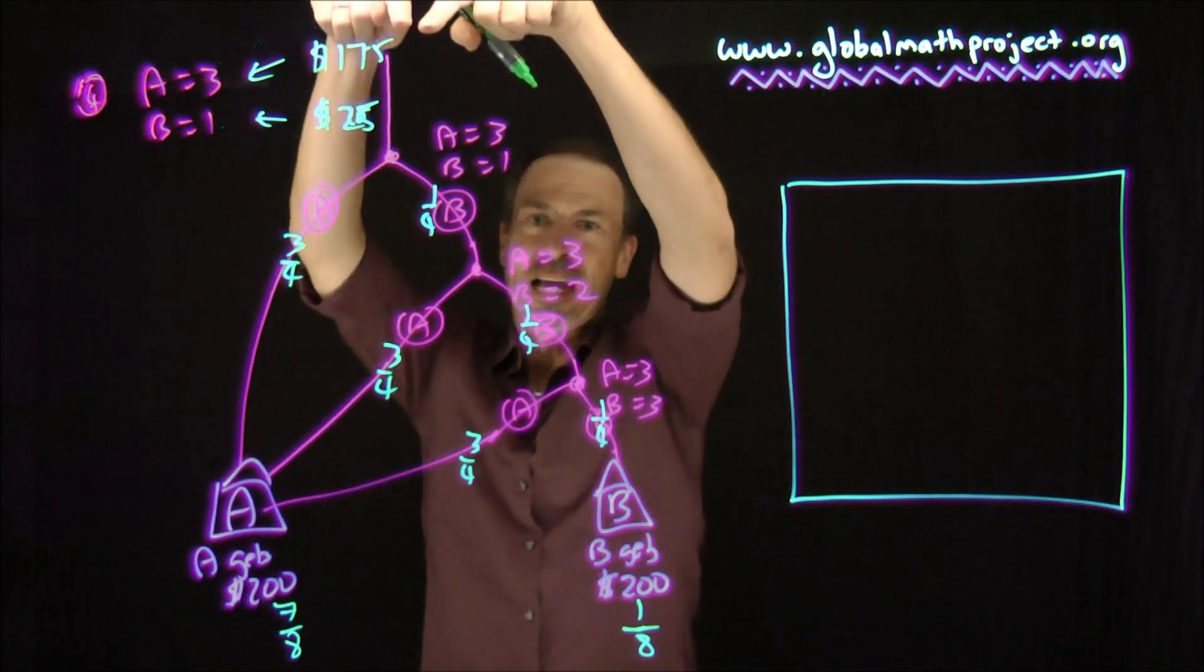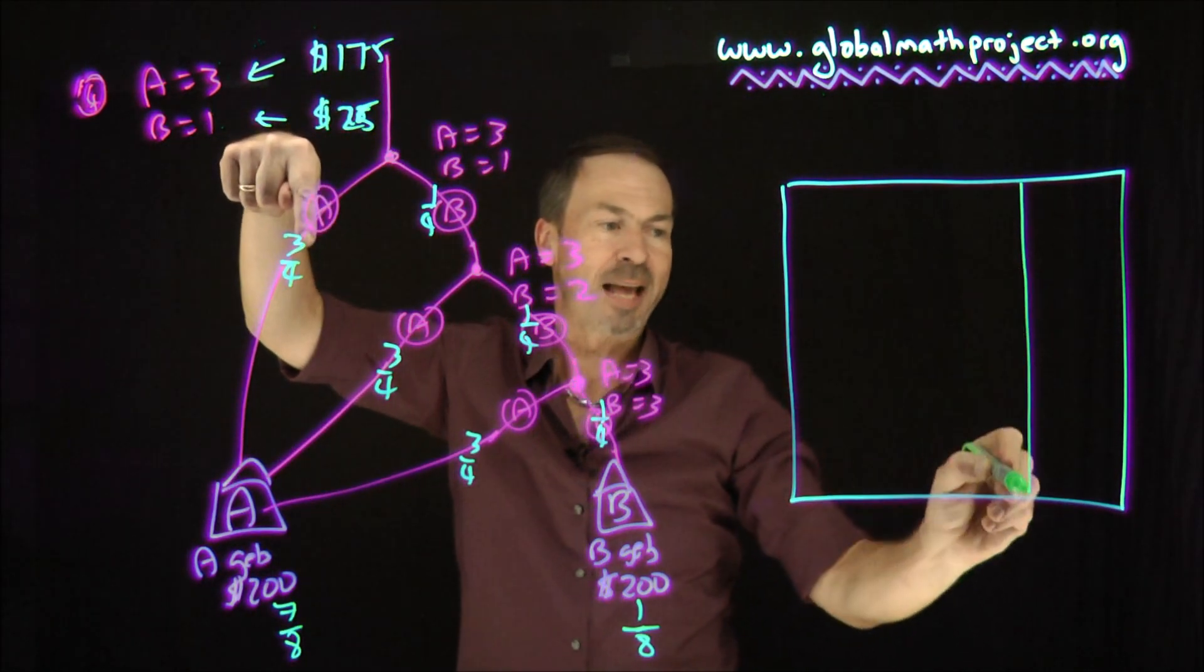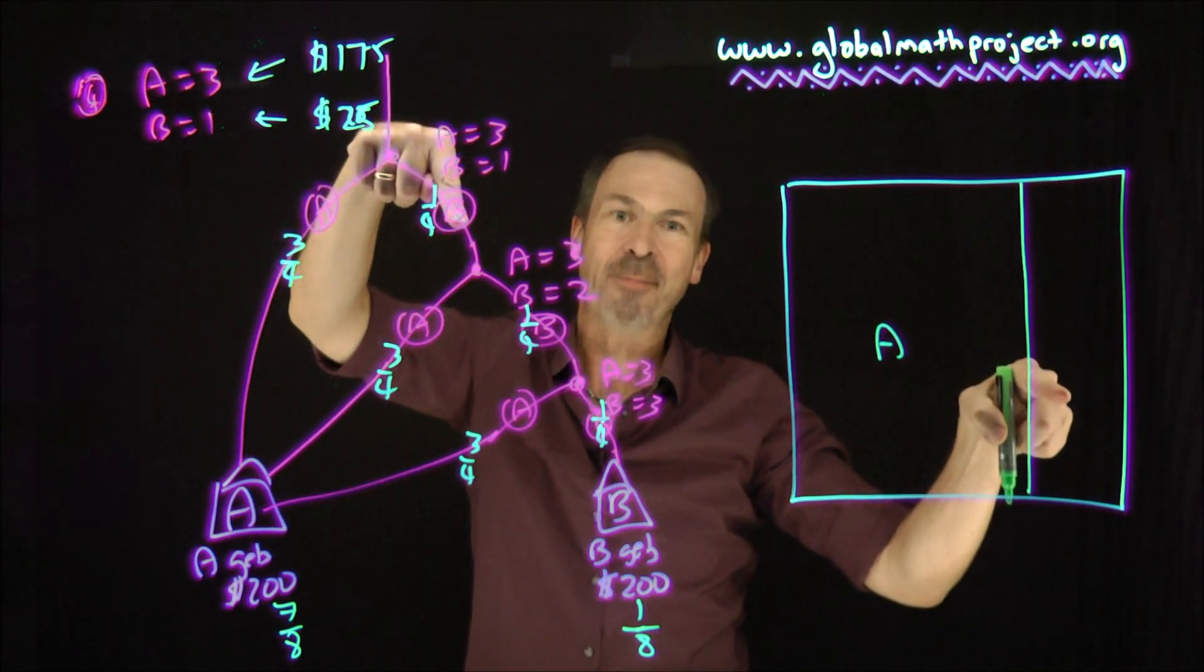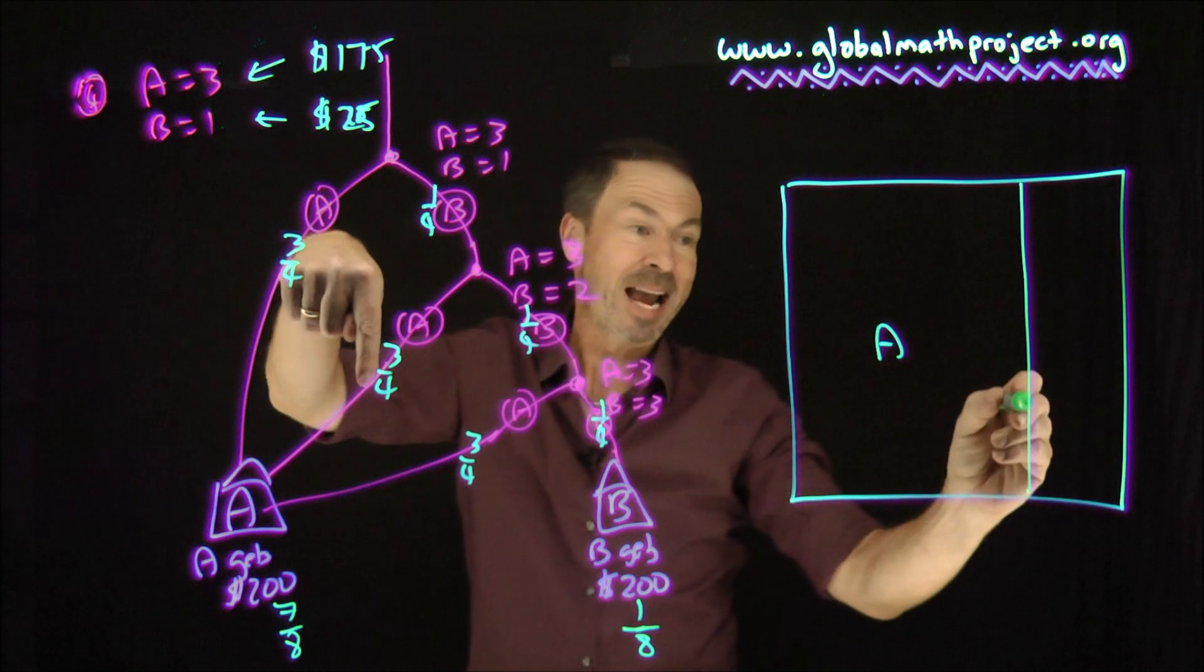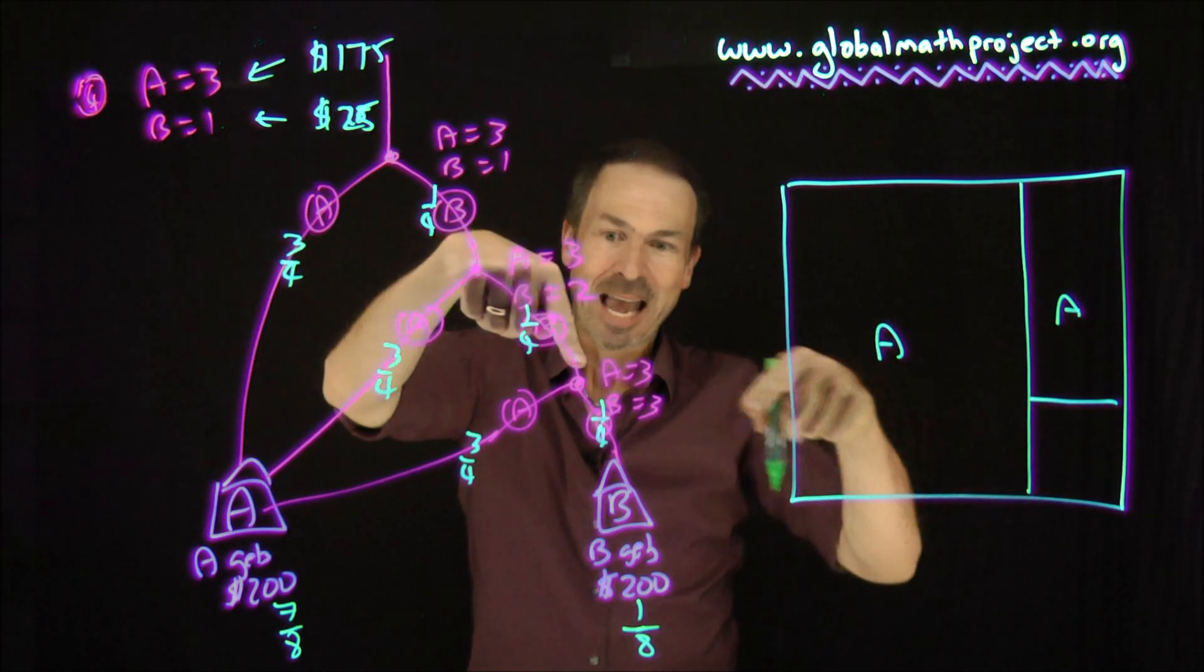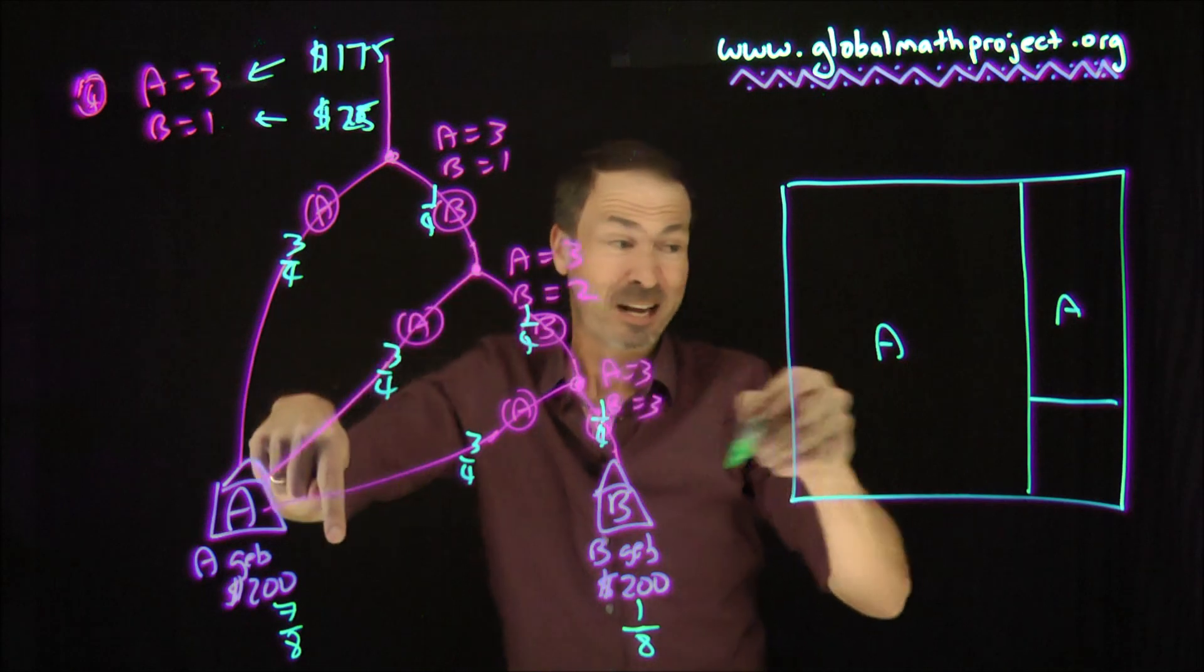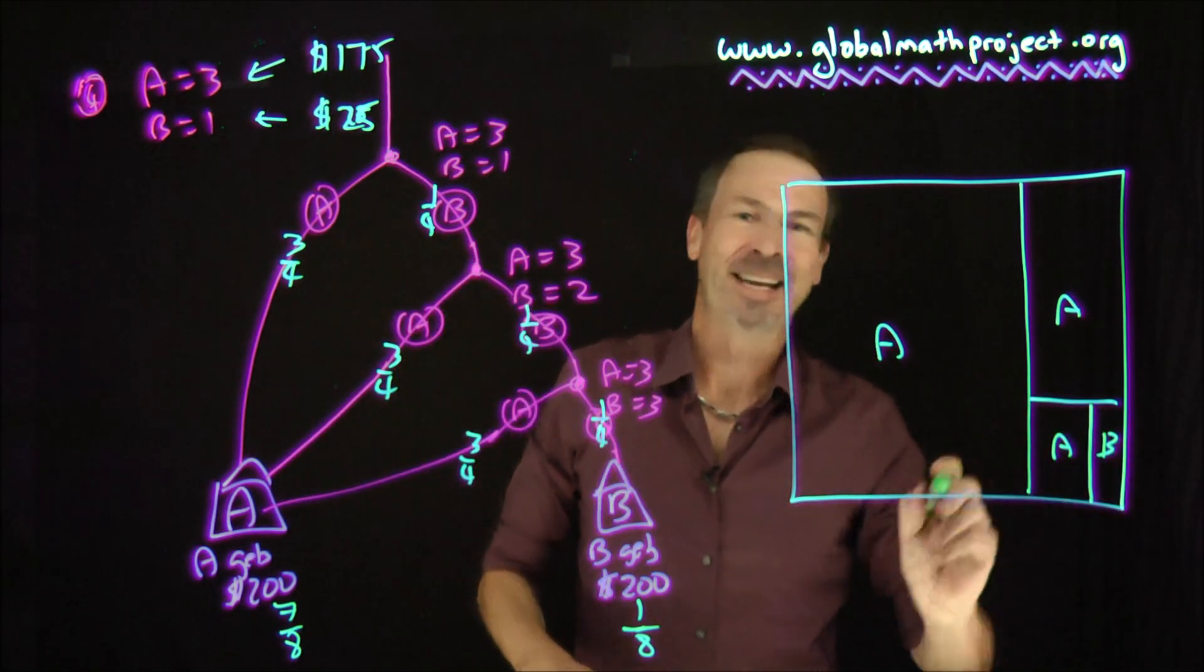So this time, come down to the fifth game, and we see it splits into three quarters with A winning and one quarter of the time going on to the sixth game. When we come to the sixth game, three quarters of the time A wins, and one quarter of the time we go on to another game. And then the final game, the seventh game, three quarters of the time A wins, and one quarter of the time B finally gets the $200.